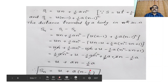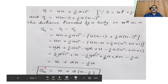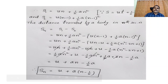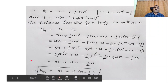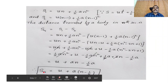This formula SN equals U plus A of N minus half gives the distance travelled by the body in the Nth second. These are the four important equations of motion in this chapter, and they are very useful in higher education. We must remember all four equations when doing problems.